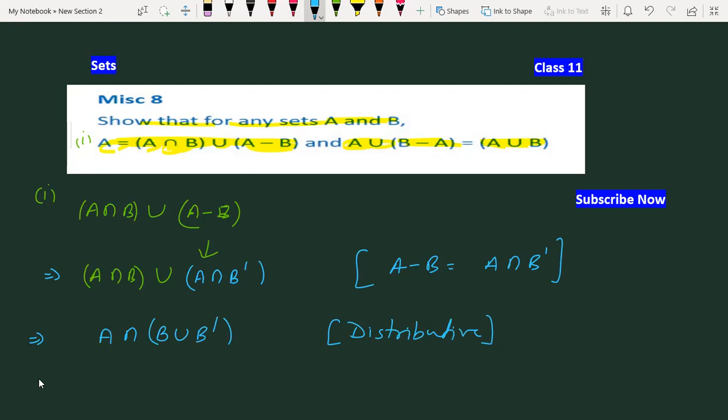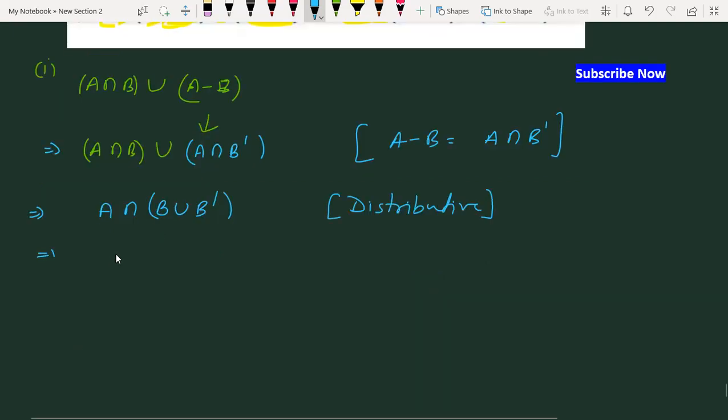Distributive property: B union B complement. When we take the union of any set with its complement, it equals the universal set.